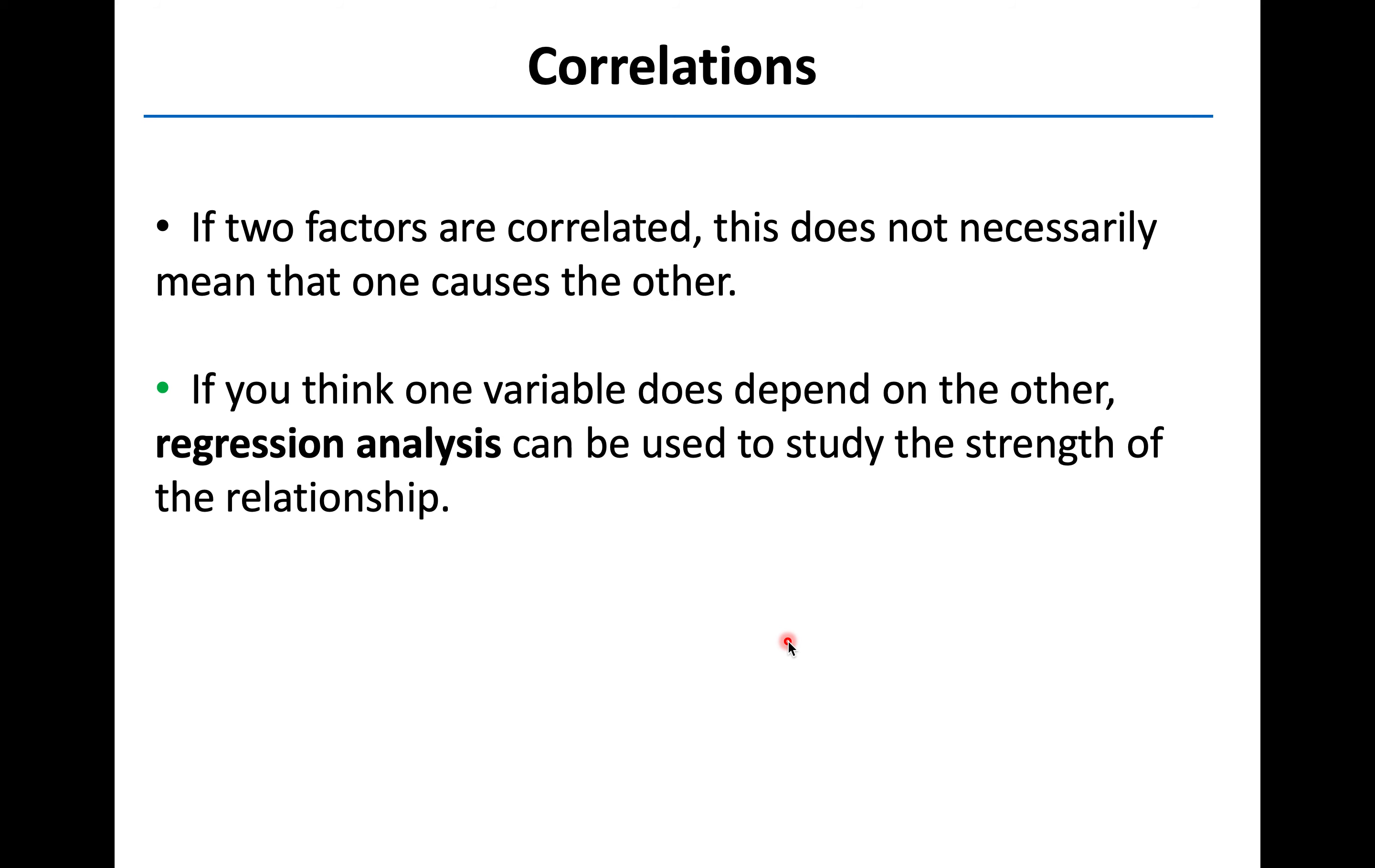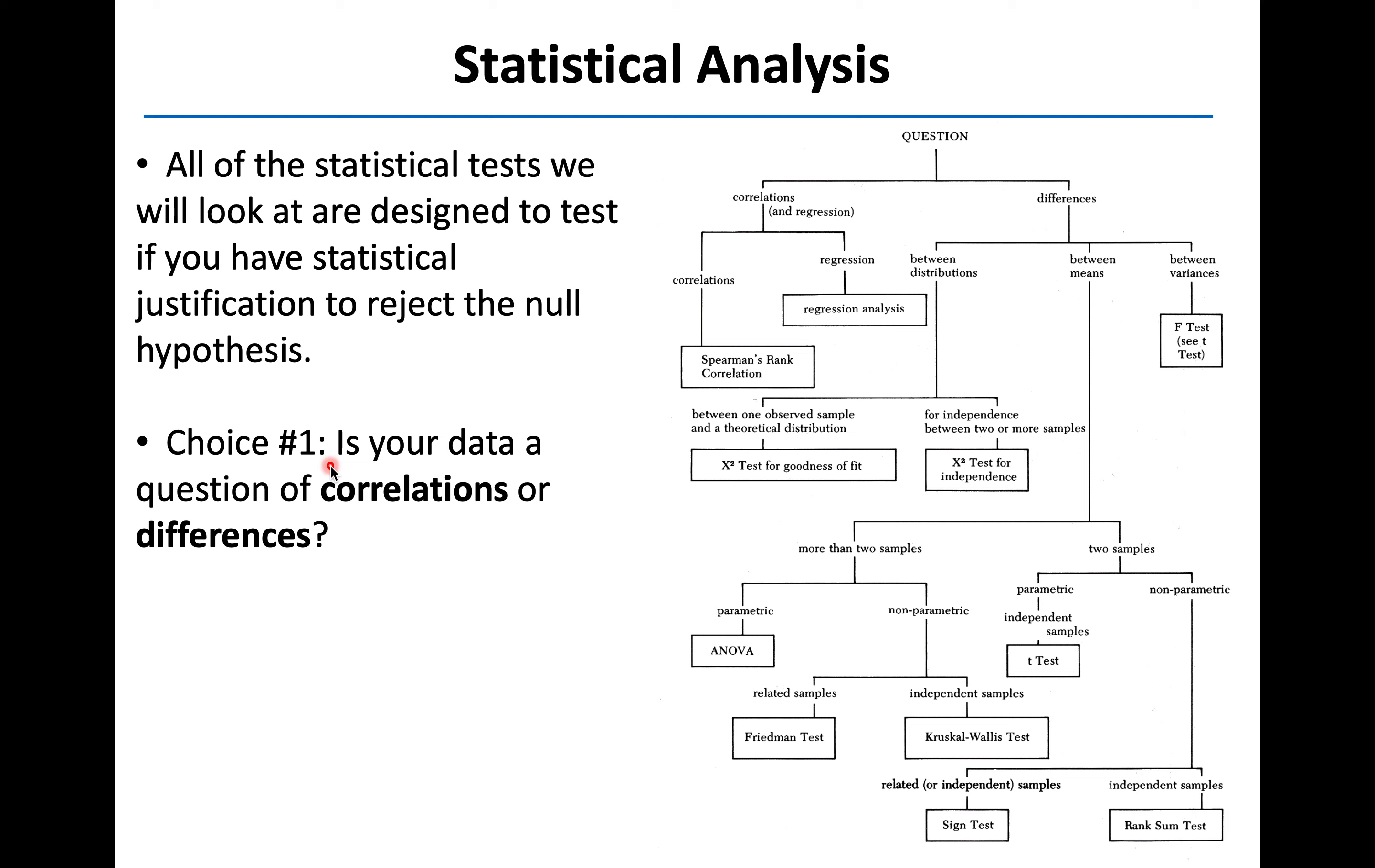I also wanted to point out, even if you do find a correlation, that doesn't necessarily imply causation. So just keep that in mind. You can have a correlation, but that doesn't necessarily mean that one thing causes the other. However, if you do think that one variable really depends on the other, then that's where regression analysis is going to come in, trying to nail down the strength of that specific relationship.